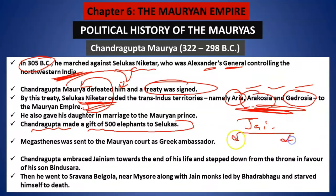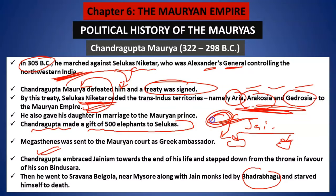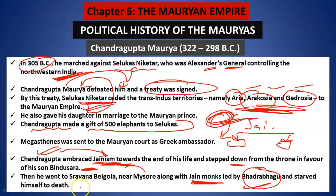Agar aapko yaad hoga — in Jainism there were two sects which became Shvetambaras and Digambaras. Bhadrabahu moved to south India with Chandragupta Maurya, and I had told you to wait for this detail. Chandragupta Maurya later in his life adopted Jainism and then stepped down from the throne, giving the throne to his son Bindusara. He went to Mysore with the other Jain monks led by Bhadrabahu, and there he dies — wo apne aap ko bhuka rakhkar mar jaate hain — because in Jainism, starvation is also a path towards nirvana.